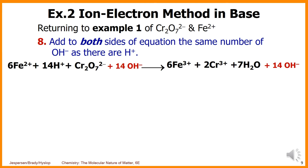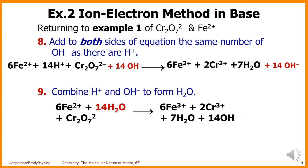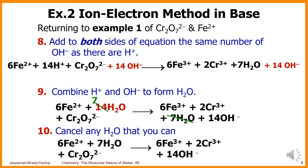In example one we have 14 H⁺, so we add 14 OH⁻ to both sides of the equation. Then we combine the 14 H⁺ with 14 OH⁻ to form 14 H₂O. On the other side we already have 7 H₂O, so we cancel 7 H₂O from 14 H₂O, leaving 7 H₂O. This gives us the balanced equation in basic solution.